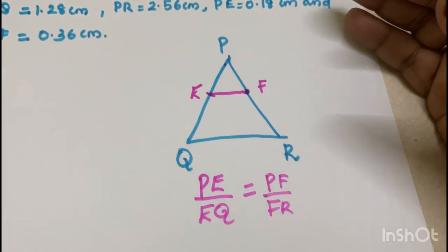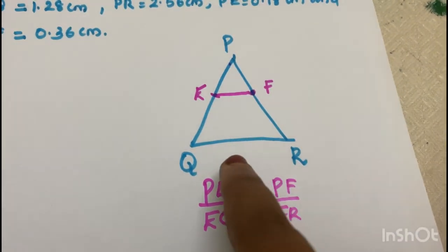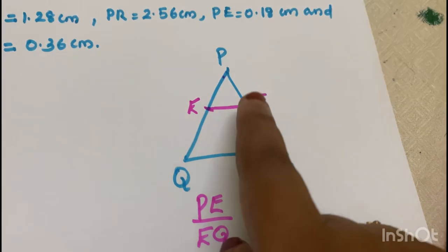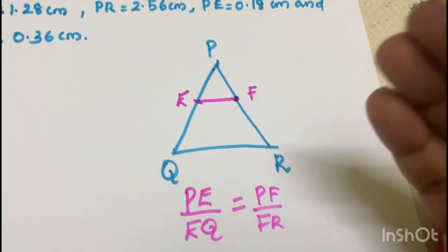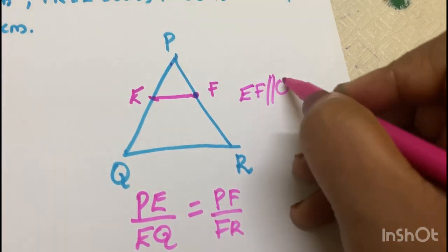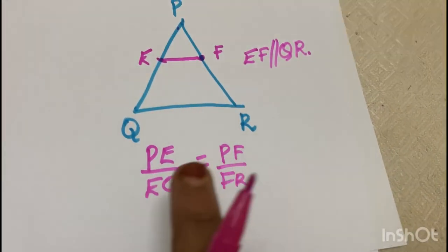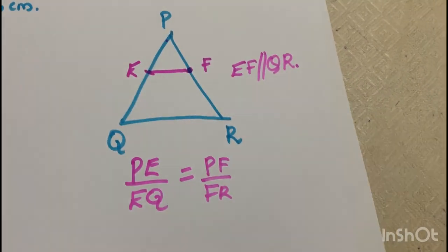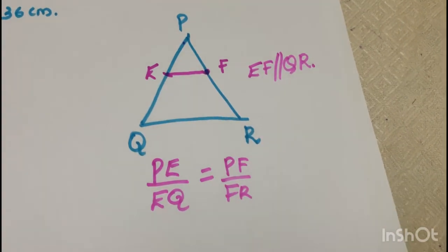If we are learning the Basic Proportionality Theorem, we are looking at a triangle. In this triangle, one side is parallel to another line. The triangle's two sides are divided in equal ratio — the same ratio. That means EF is parallel to QR.